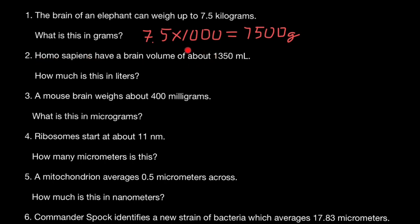Homo sapiens have a brain volume of about 1,350 milliliters. How much is this in liters? There are 1,000 milliliters in one liter. Milli means 1,000 of something — in this case, 1,000 of a liter, so one milliliter is one-thousandth of a liter. So we have to divide 1,350 milliliters by 1,000, and we are going to get 1.35 liters.